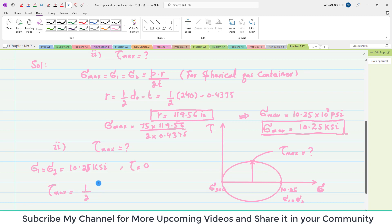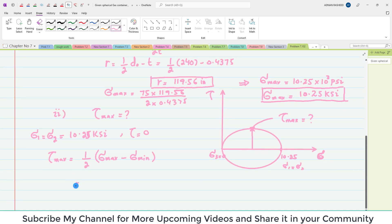The maximum shearing stress will equal (1/2)(sigma max, which is sigma 1 or sigma 2, minus sigma minimum). Sigma minimum is sigma 3, which equals 0.